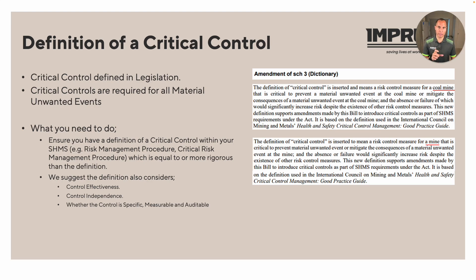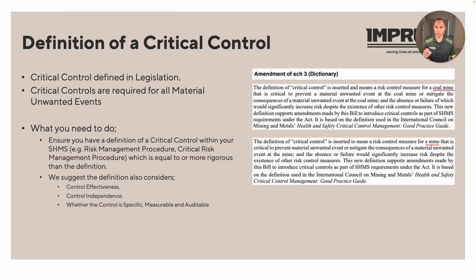So this definition of a critical control — something you're probably familiar with — is now in the legislation, which it never previously was. We know that we need critical controls for all material unwanted events. Similarly, you need to have this definition somewhere in your SHMS or your critical risk management procedure or risk management procedure, making sure it's equal to or greater than this. In our opinion, the ICMM is a good starting point — that was in 2016, and now we're potentially eight years beyond that.